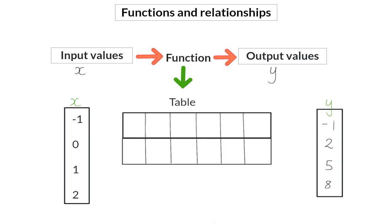The information can also be given in a table where your input values or x values will always be in the first row and your output values in the second row. Our input values were minus one, zero, one, and two, and we determined the output values as minus one, two, five, and eight. In this table it can also be indicated that to determine the y value, or the output value, it is three times the input value plus two.